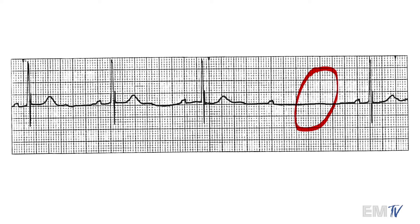If you look a little bit before that gap, you're going to notice a lone P wave. Having a dropped QRS complex with the presence of a P wave that precedes it is indicative of a heart block.